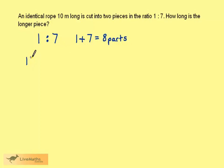The rope is 10 metres long. If we divide this by 8, we get 1.25 metres. So each part is 1.25 metres.